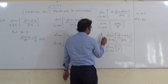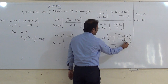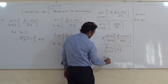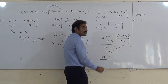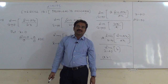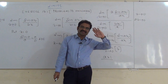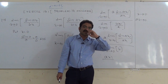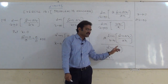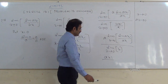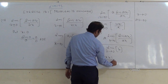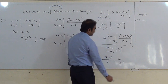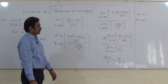The constant A comes outside: A times the limit of sin(Ax)/(Ax) as x tends to 0, divided by B (since the limit of B as x tends to 0 is just B). The limit sin θ / θ as θ tends to 0 equals 1. So A × 1 divided by B gives the answer A/B.